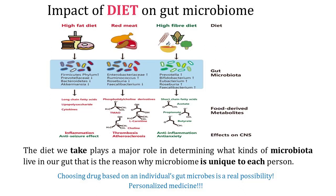On the other hand, lipopolysaccharides, cytokines, L-carnitine, trimethylamine — derived from the metabolism of long-chain fatty acids from high fat diet — and phosphatidylcholine, which is rich in poultry, egg and especially red meat, leads to inflammation, thrombosis and atherosclerosis. This is the reason why high fiber diet is good for our health. Since gut microbiome is different in each person, researchers think that choosing drugs based on an individual's gut microbes is possible and could be more effective.